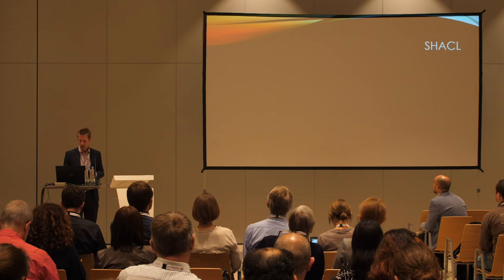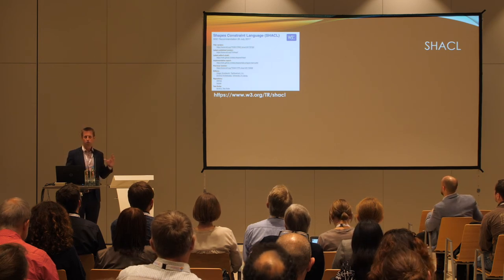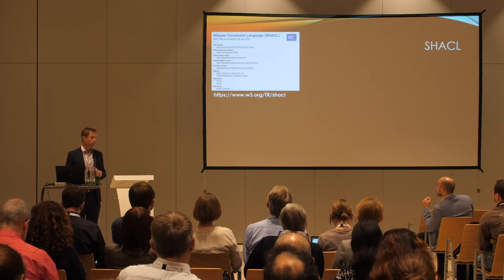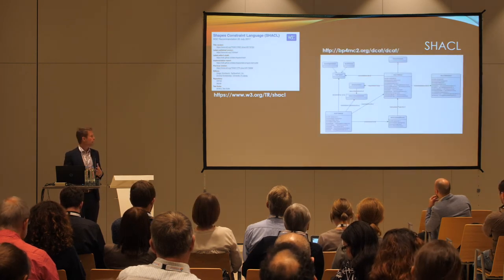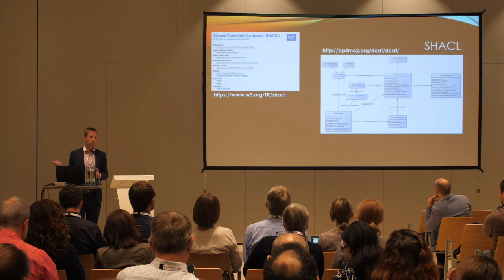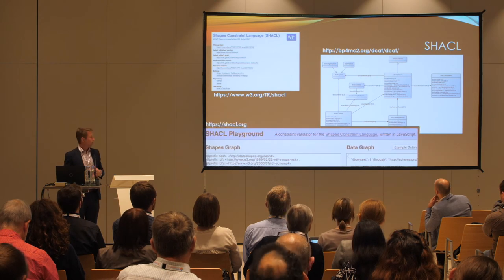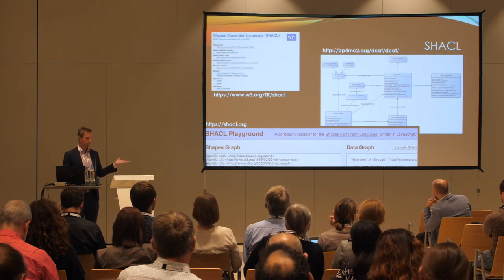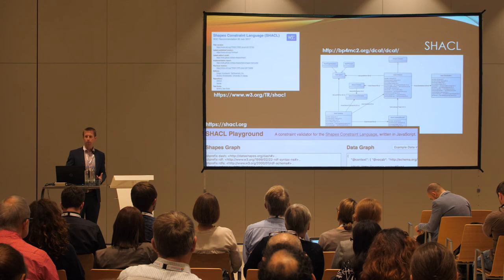What is SHACL? SHACL is the Shapes Constraint Language — a W3C standard used on the internet for linked data, to create data models and specify constraints. It can be used to create data model diagrams — the picture here was generated from the SHACL specification itself, not manually drawn. It can also be used to validate: if you have a dataset specification or metadata, you can put it into the SHACL playground and it can be validated against the format.